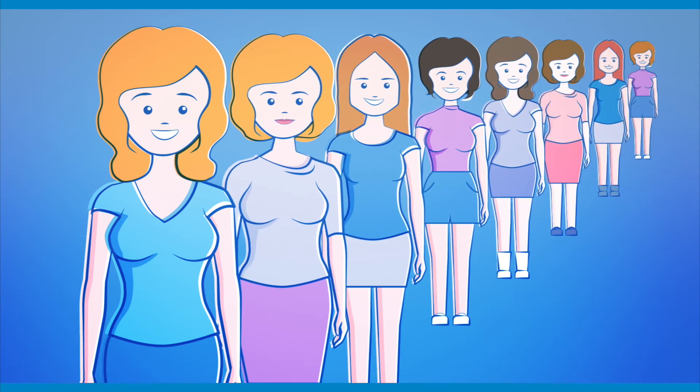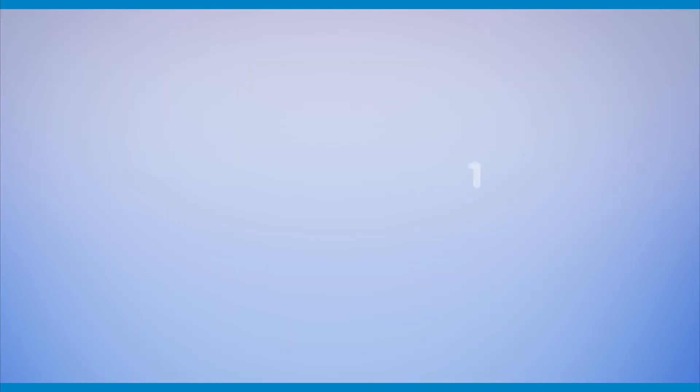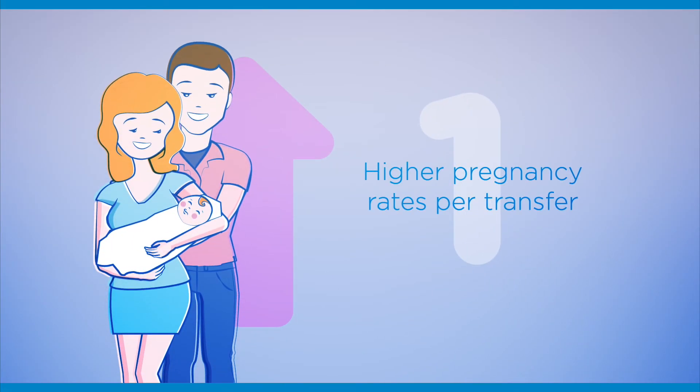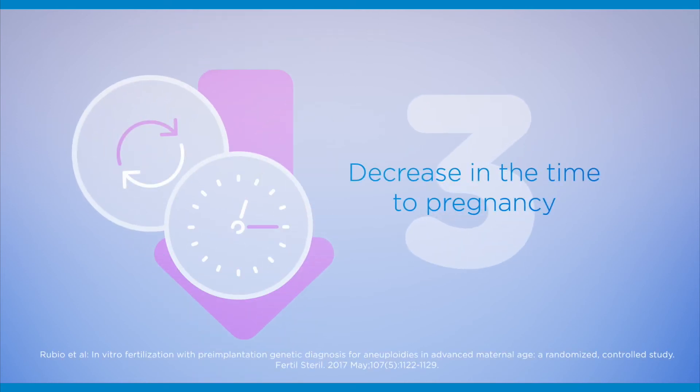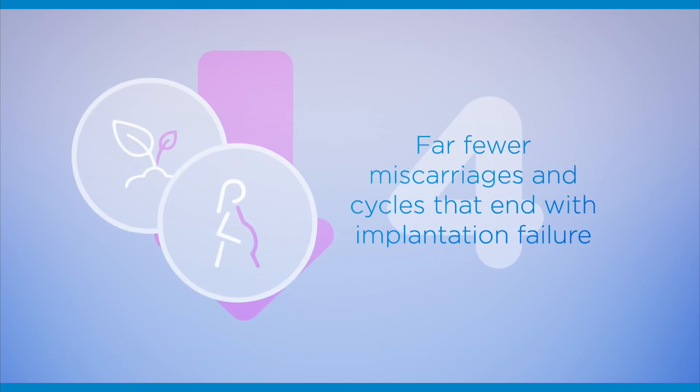With healthy embryos, we can achieve greater likelihood of having a healthy child, higher pregnancy rates per transfer, fewer IVF transfer procedures, and according to iGenomics research, an average decrease in the time to pregnancy of two months when compared to cycles without PGS. Far fewer miscarriages and cycles that end with implantation failure.